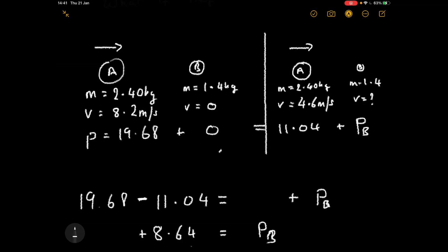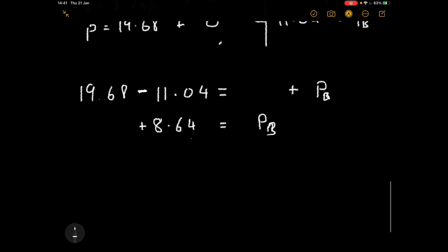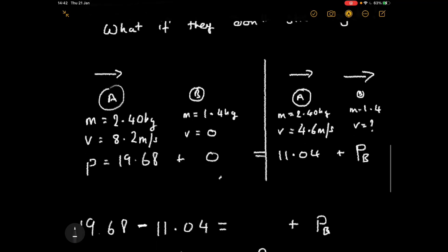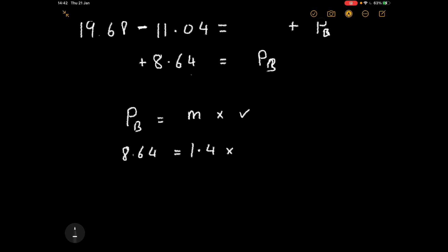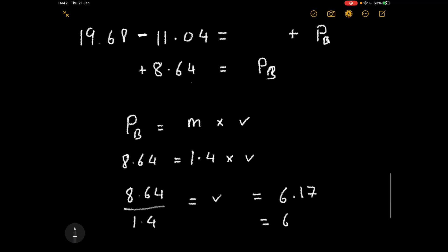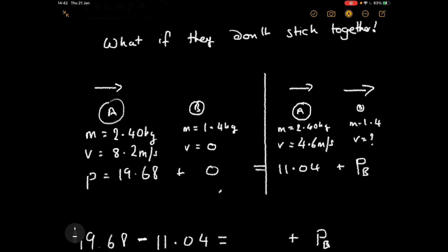The momentum of B is still positive, which tells us it's going in the same direction — to the right. Using p = mv, we get 8.64 = 1.4 times velocity, so velocity = 8.64 divided by 1.4 = 6.17, approximately 6.2 metres per second. That fills in our unknown nicely.